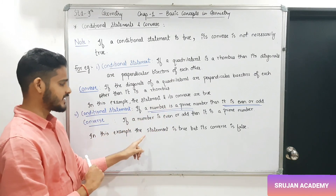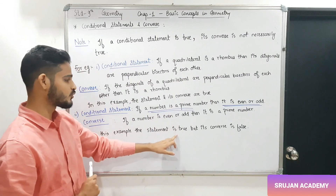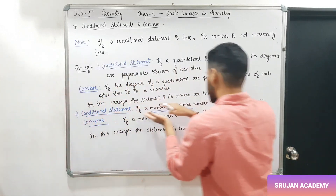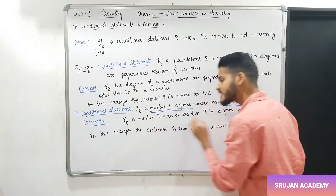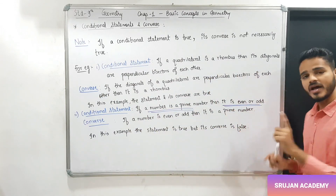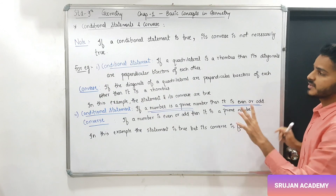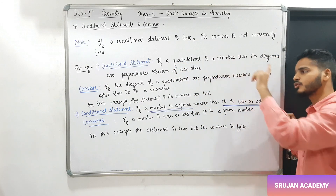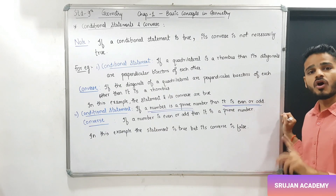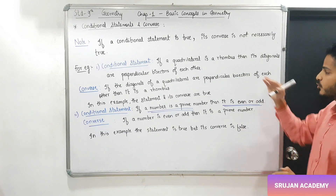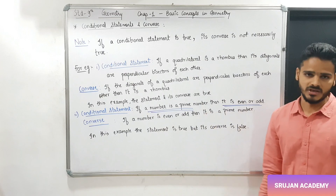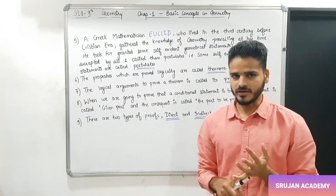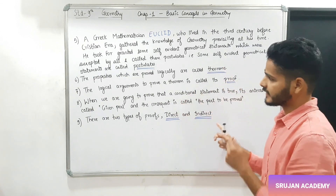So देखो — in this example, the statement is true but its converse is false. Conditional statement का truth value true है, और converse का truth value false है. तो जब भी conditional statement का converse लिखते हो, converse जरूरी नहीं कि true ही रहे — true भी हो सकता है या false भी हो सकता है. पिछले examples में आपने conditional statement और converse देखा, अब आगे बढ़ते हैं.